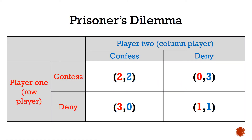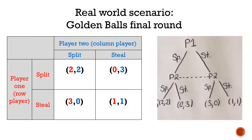This final round is a Prisoner's Dilemma game. This is a game where two players are accused of a crime and have to choose whether to confess or deny. The payoff matrix for this game is shown, and we assume perfect information and rationality. We now look at our real life example: split is equivalent to confess and steal to deny. This is shown in a payoff matrix and extensive form.